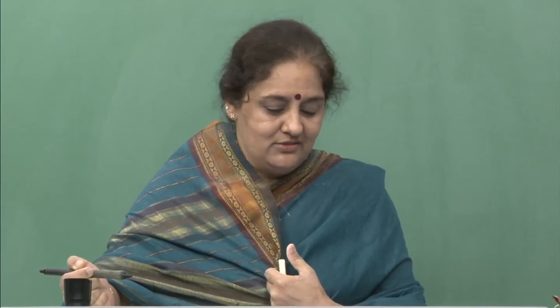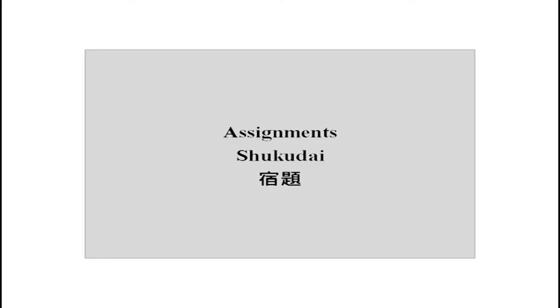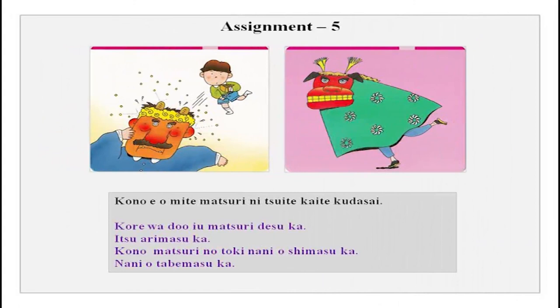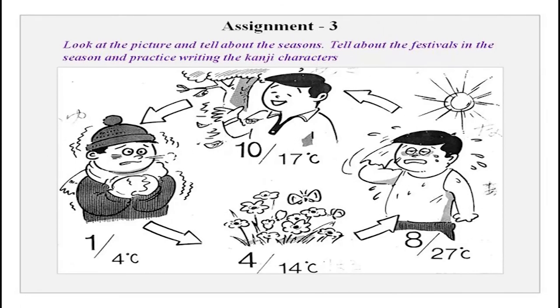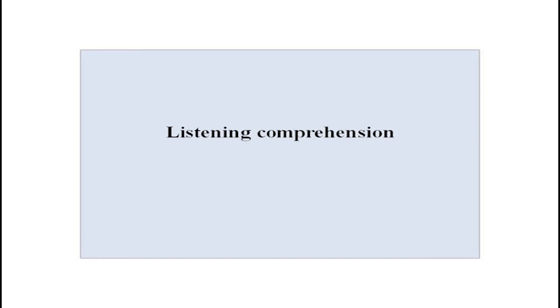Now after this you have your assignments, your shukudai. You can see the kanji. There is lots to do today. Look at these pictures carefully, see what festival it is and what is done during it, and write a small sakubun on this festival. Match group A with group B. Tell about the seasons. In the end you have your listening comprehension — listen to it carefully and then do that exercise.